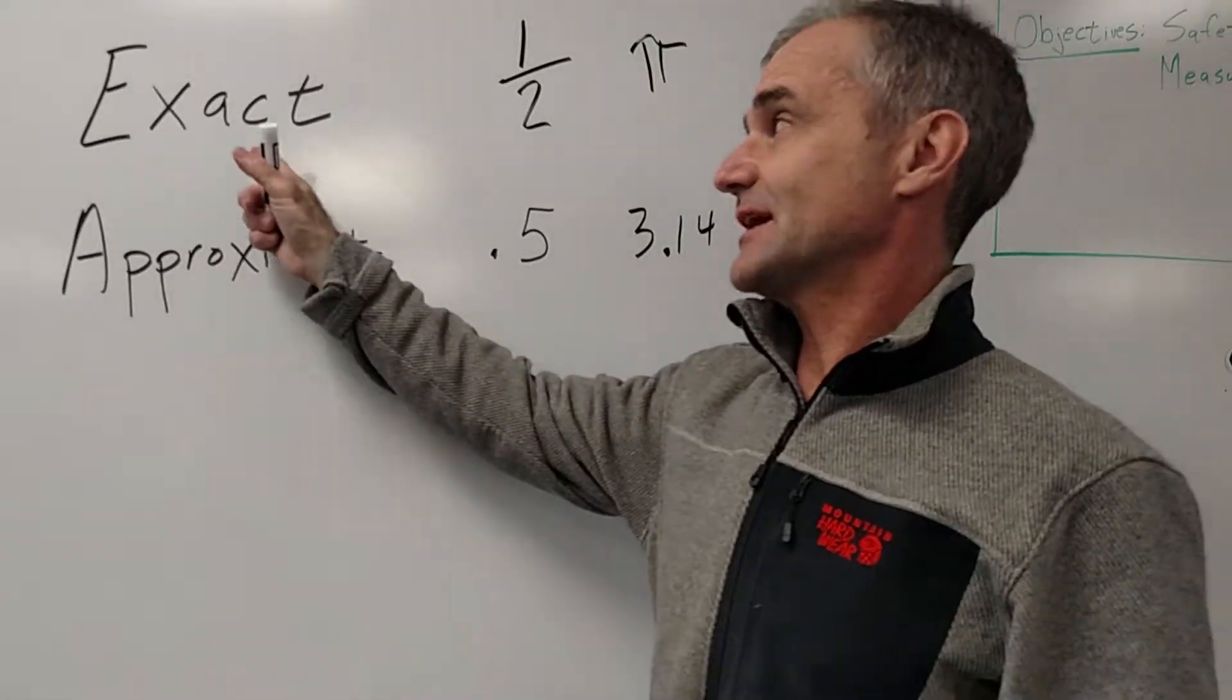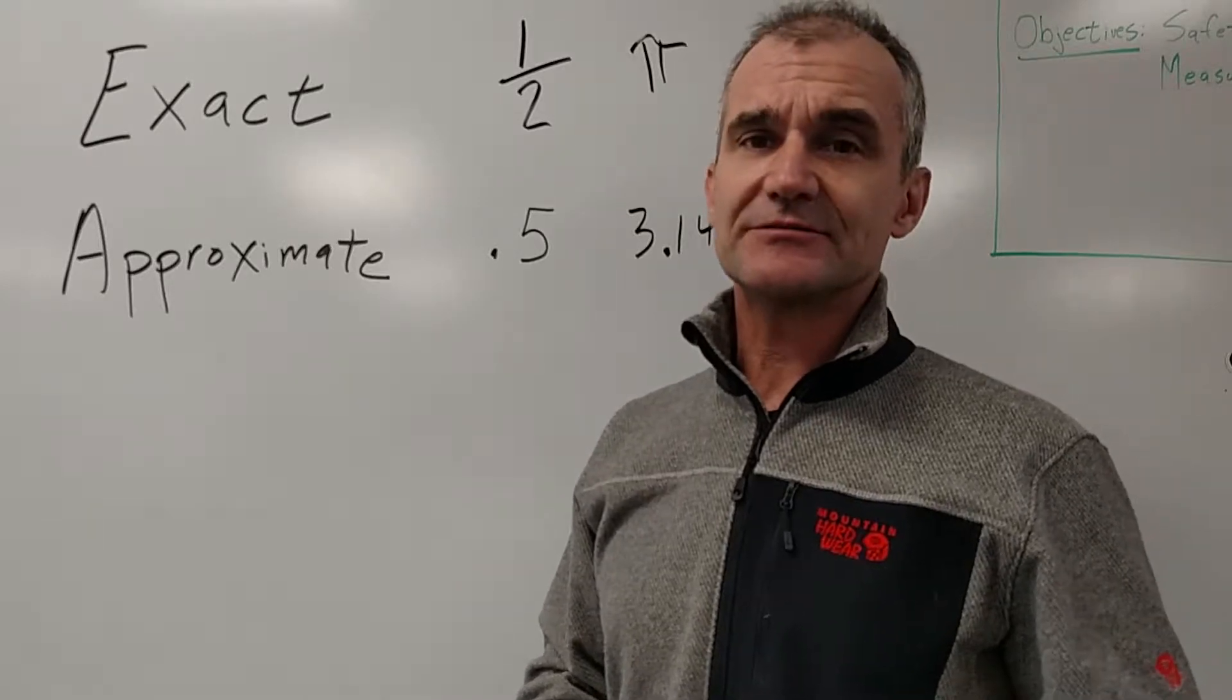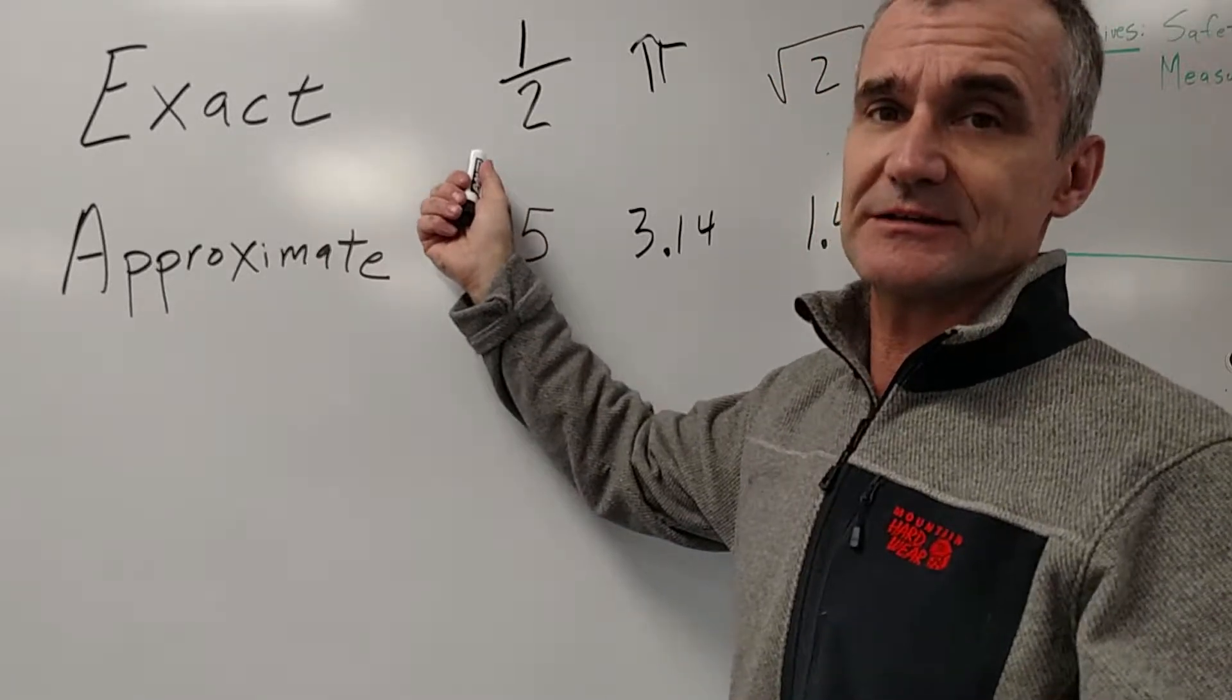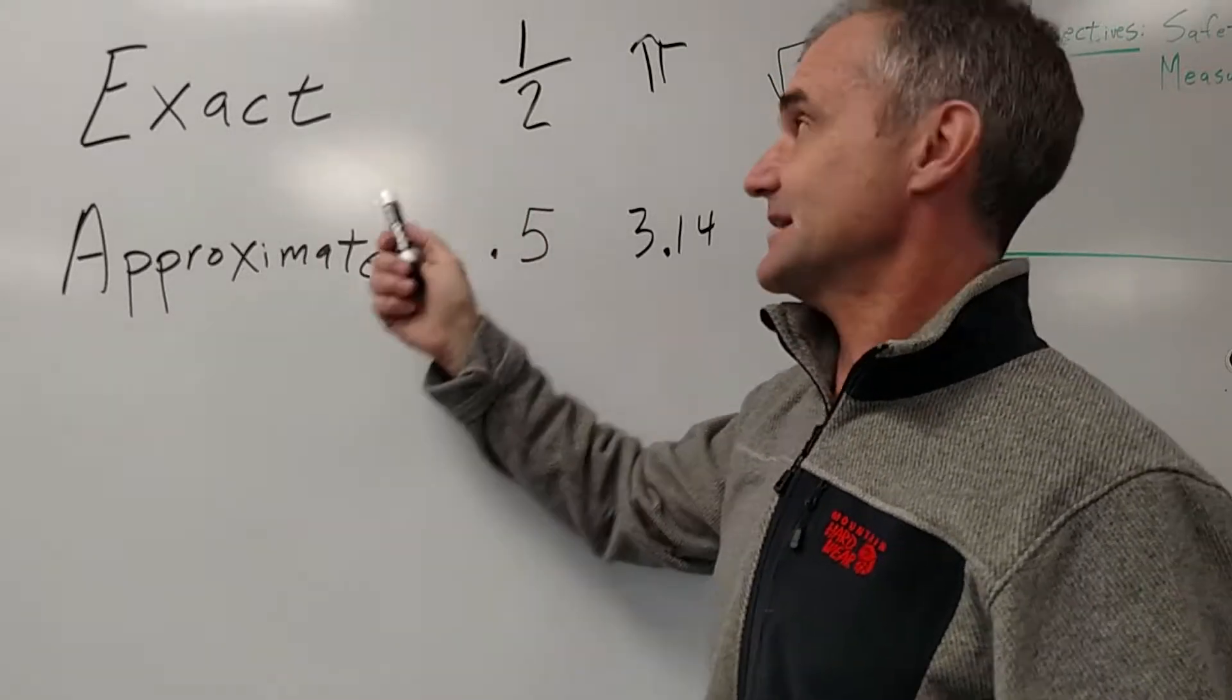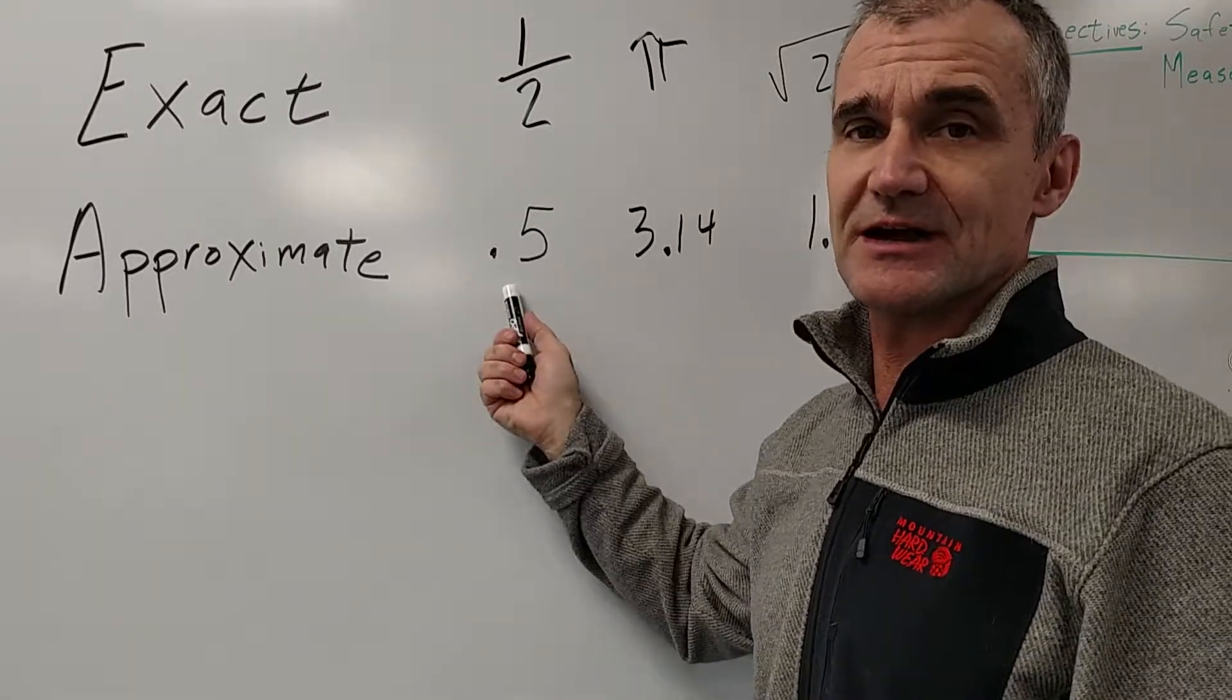So an exact value is always a better answer because there's no rounding involved. An approximate value is the exact value put into your calculator and then rounded. So an exact value would be a half. The decimal approximation of it would be 0.5.